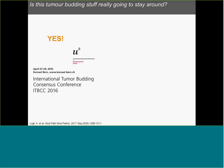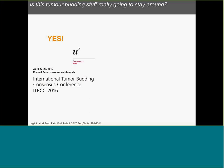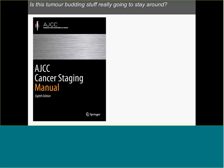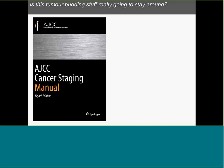Tumor budding is here to stay. There was an International Tumor Budding Consensus Conference (ITBCC) in Switzerland in 2016, which provided consensus statements and strong recommendations based on the literature. Key findings: tumor budding is an independent predictor of lymph node metastasis in pT1 colorectal cancer; tumor budding should be counted on H&E; and tumor budding is assessed in the hotspot at the invasive front. The AJCC 8th edition mentions it in the references, and CAP now makes it an optional component in Note F.